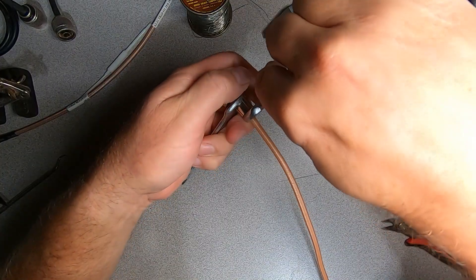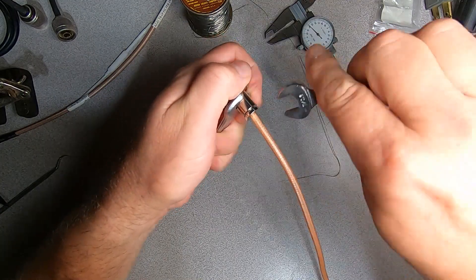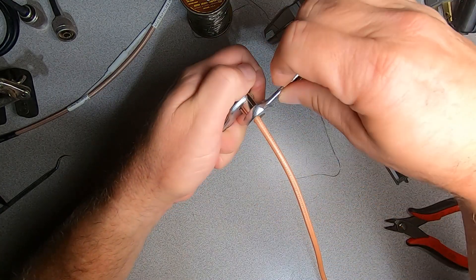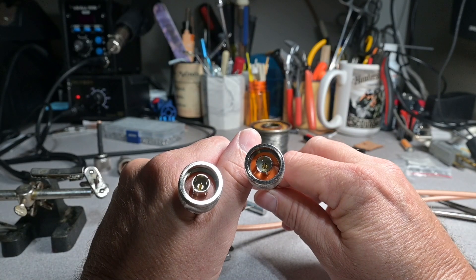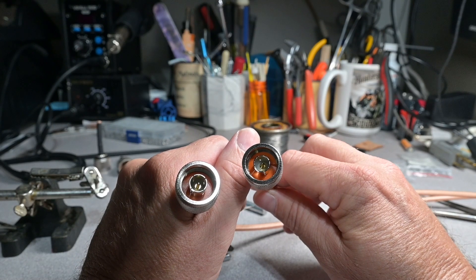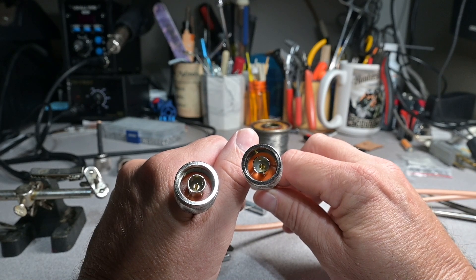Now when you tighten up your connector body, use two seven sixteenths wrenches. Now after inspecting your work, repeat it at the other end of the cable and let's sweep our cable and see if we were successful.